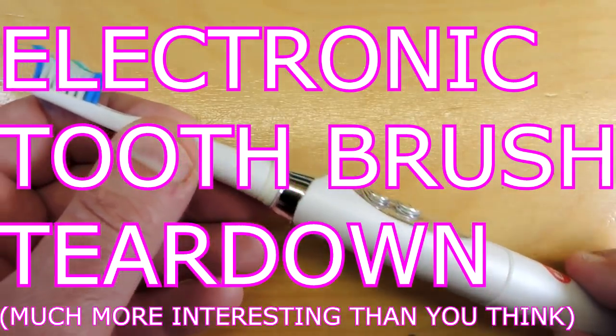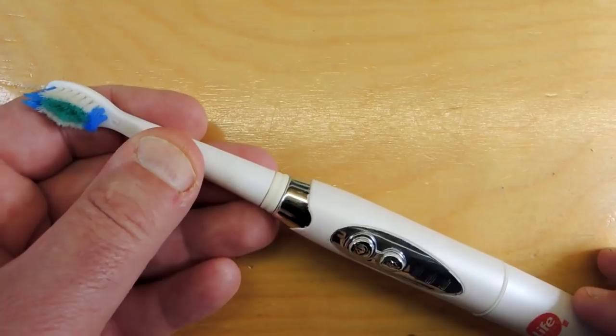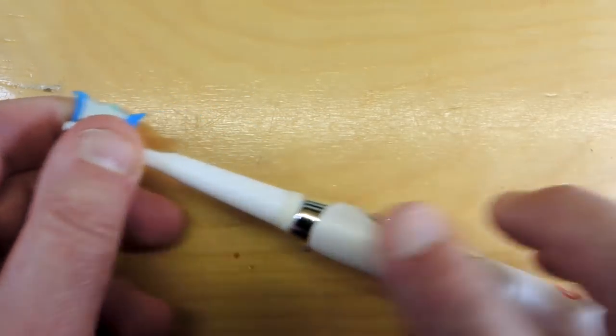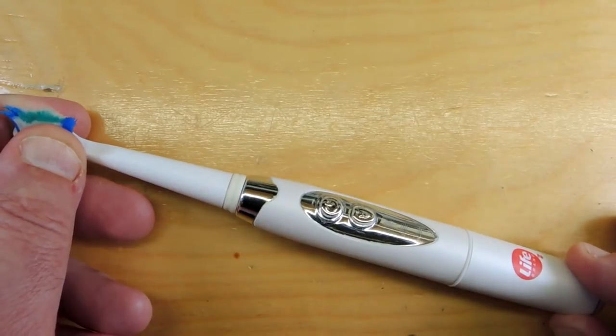Electronic toothbrush, but hold on, this is actually much more exciting than you would expect for a teardown. Let's instrument the head with a sensor and see what the vibration pattern looks like, and then let's tear apart the electronics and see how it was built.